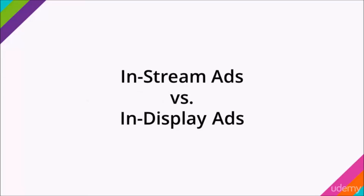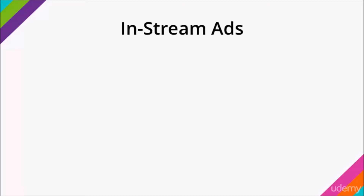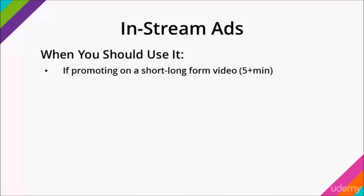During this video I want to cover the two types of video ad formats for Google YouTube video ads: in-stream video ads and in-display video ads. There can be some confusion about when to use which one, or whether to use both. You should use in-stream video ads when you want to advertise your video content before a short or long-form video on YouTube — typically videos that are five minutes or longer. You don't want to run an in-stream ad on a 10-second video, because people will just skip it. Only use in-stream ads for videos that are five minutes or longer.